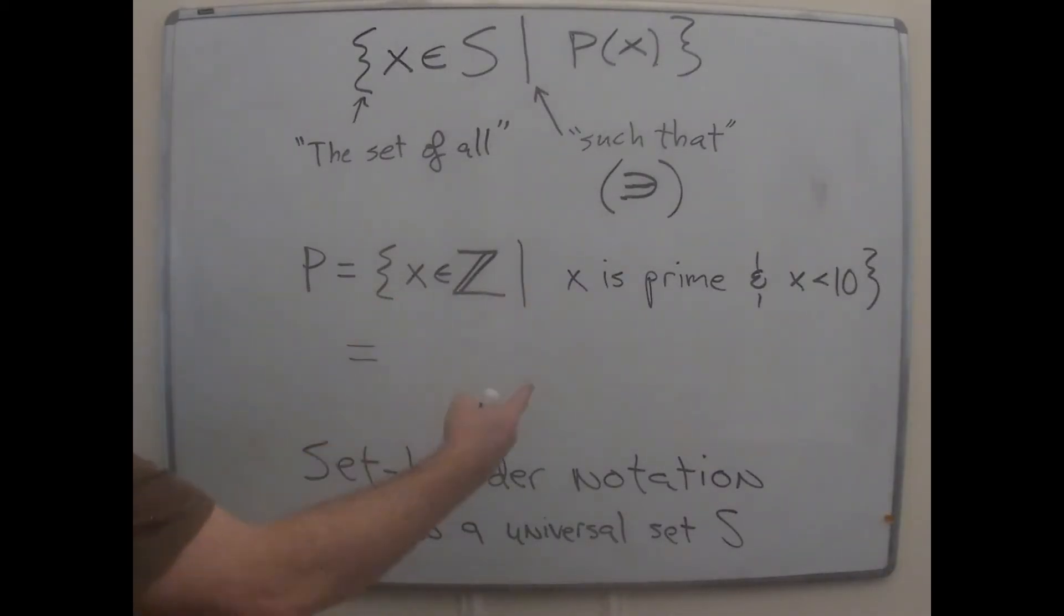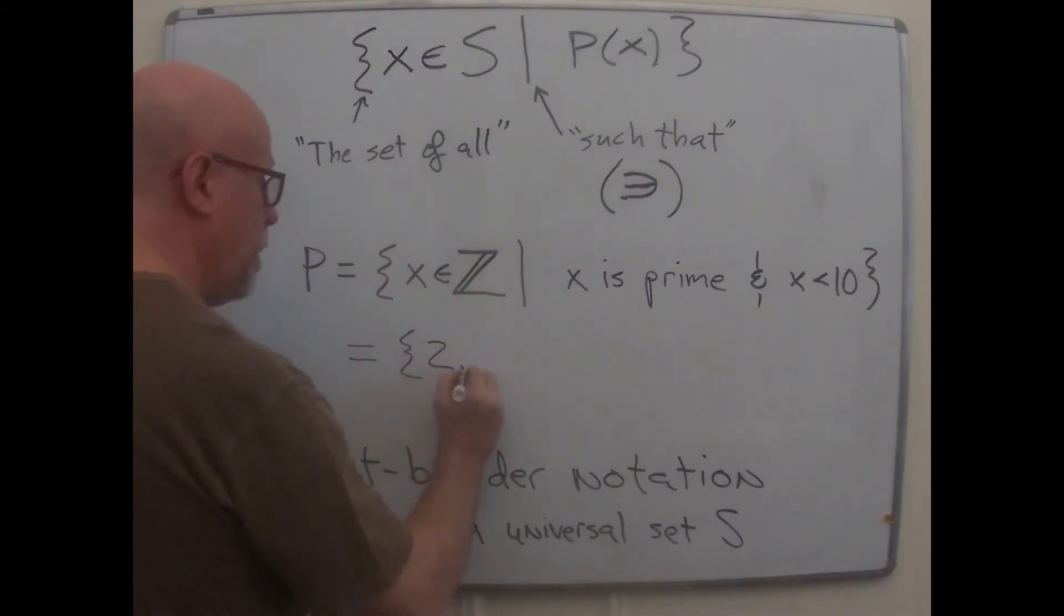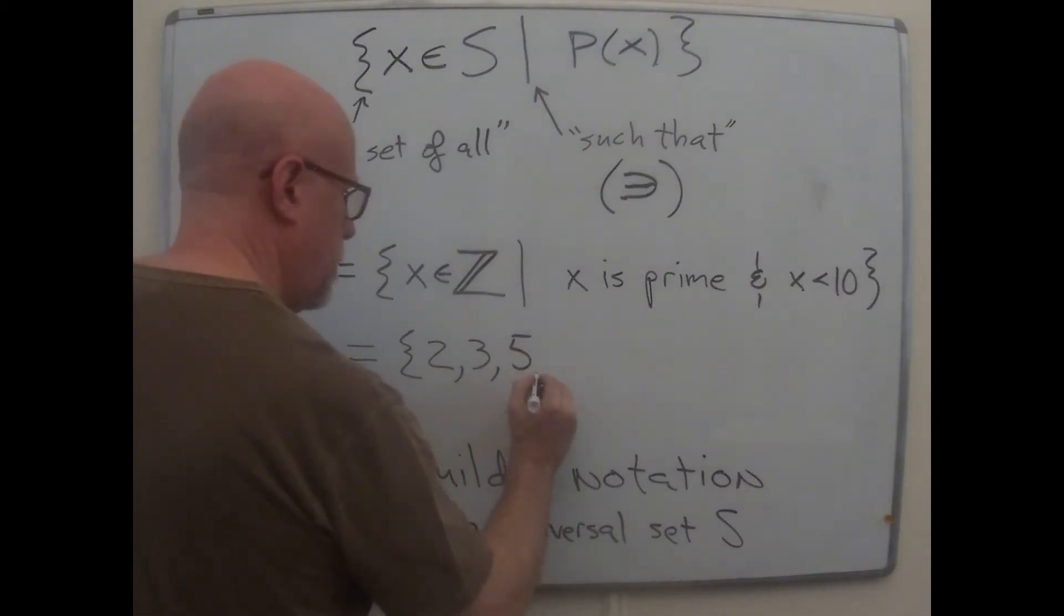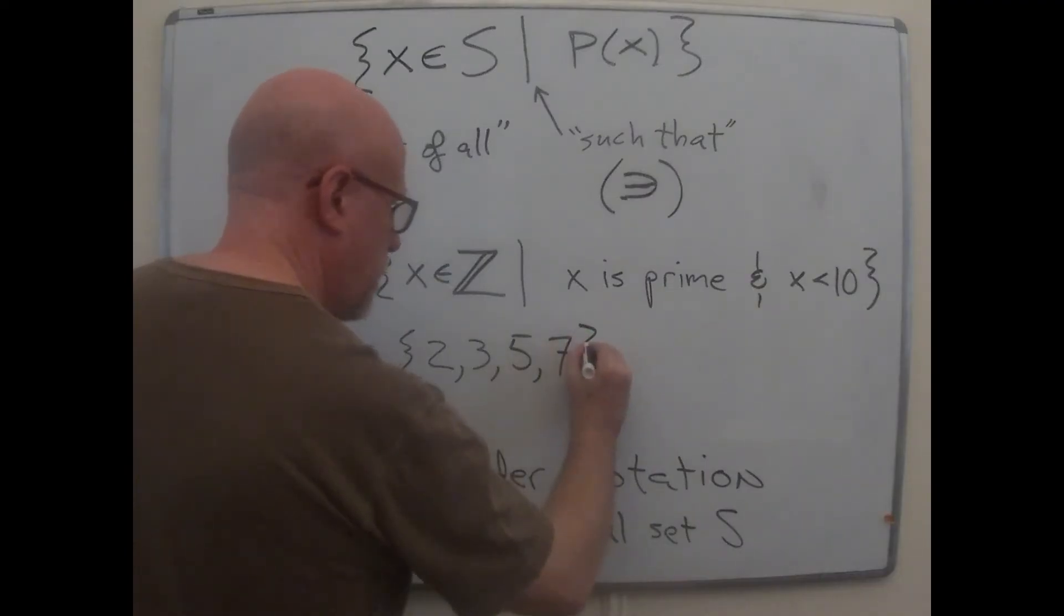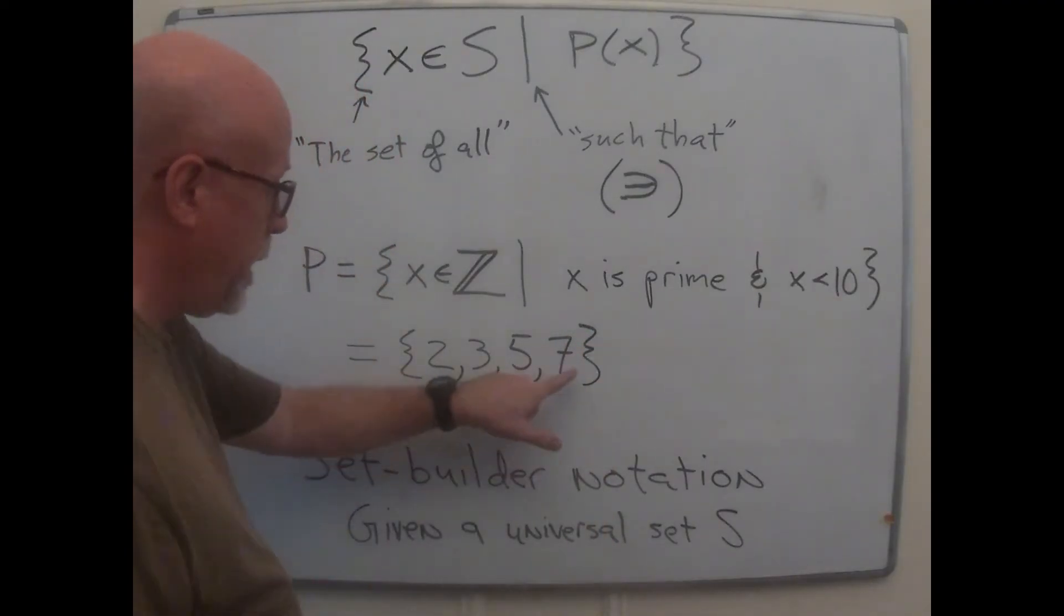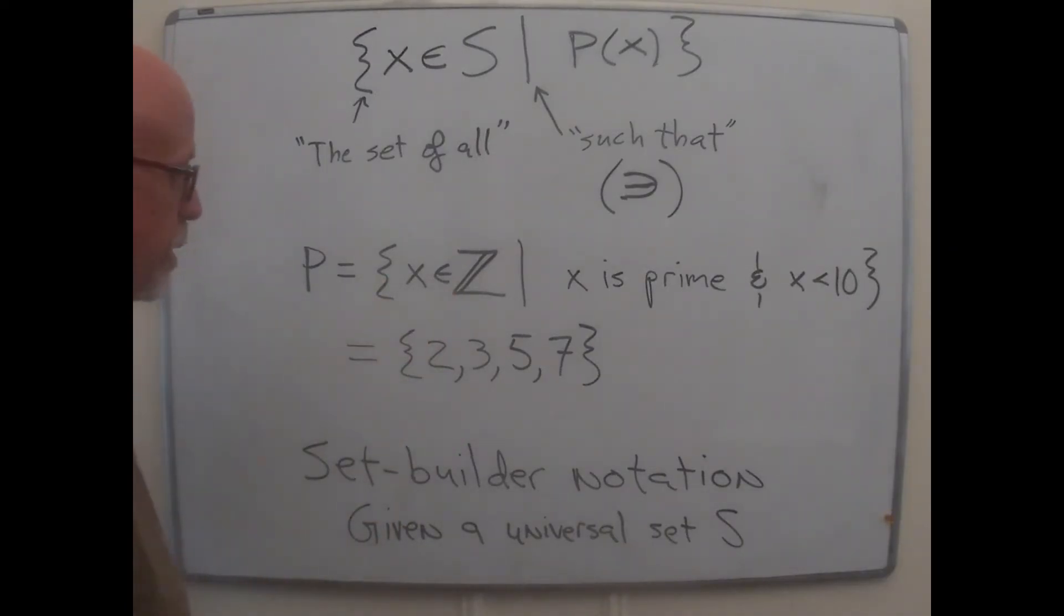What numbers are primes? A lot of people think one is a prime, but it, for technical reasons, doesn't count. So one's not a prime, but two is. And three is. Four is not, but five is. Six is out, seven is a prime. And then that's it. Under 10, because remember nine is three times three, that's not a prime. So two, three, five, seven is the roster form of the set I've described right there.